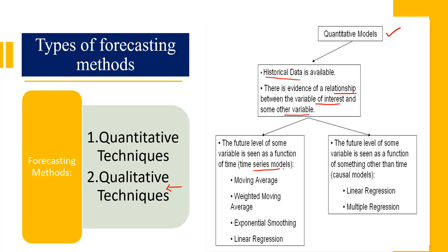In order to do this we can take two important models: either we can focus on the time series model or we can focus on the causal model. Within time series itself we have lots of models — the most basic is called the naive model, and after that we have the mean method, moving averages, weighted moving average, exponential smoothing, and linear regression for trend projection.